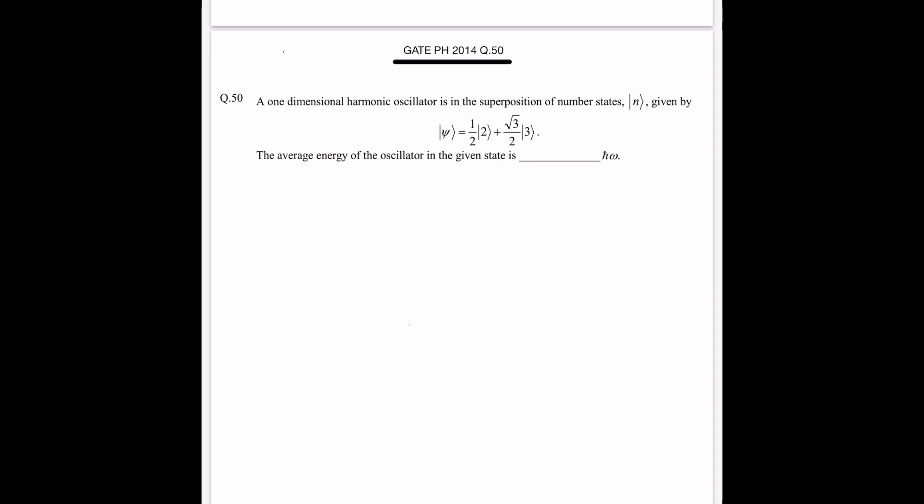In this video I am going to solve question number 50 of GATE Physics 2014. A one-dimensional harmonic oscillator is in the superposition of number states |n⟩, given by these states. The average energy of the oscillator in the given state is...